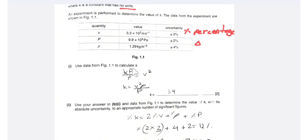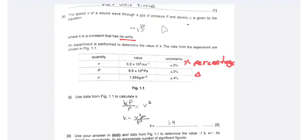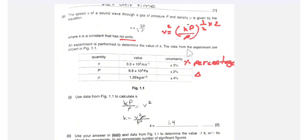Use the data from figure 1.1 to calculate k. We use the equation v equals k times (p over rho) to the power of 1/2. Since there is a power of 1/2, we can cancel this by squaring both sides, so v squared equals k times p over rho. Therefore, k equals v squared times rho divided by p.